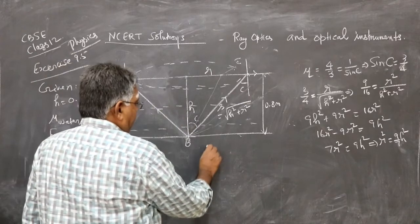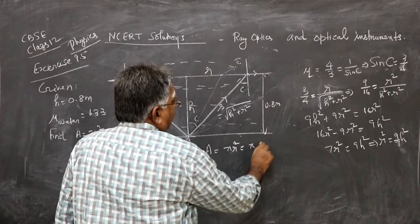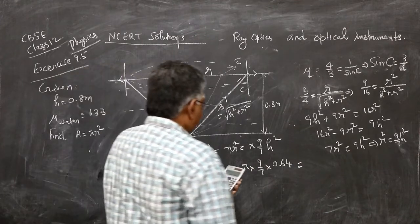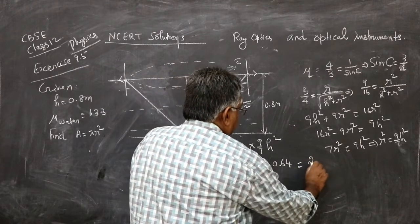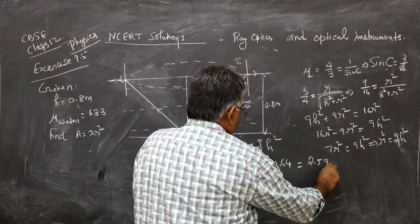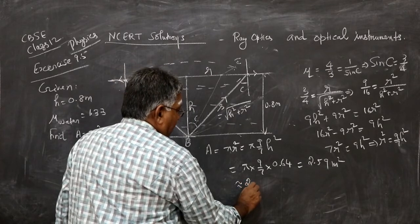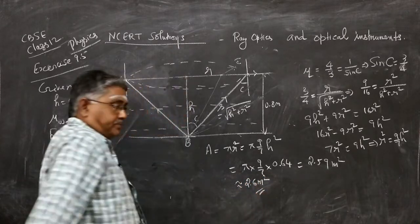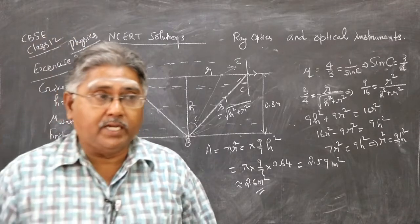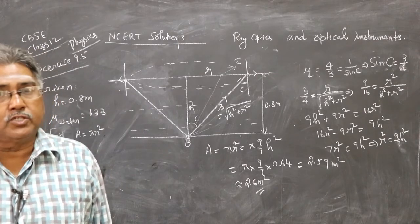We want pi R squared. So area A is pi R squared, pi into 9 by 7H squared equals 2.59 meter squared. So the area of the circle through which light can emerge out from water and reach the observer outside is 2.6 meter squared.